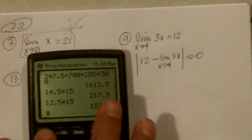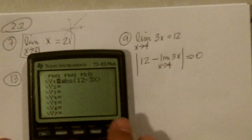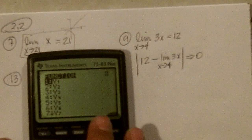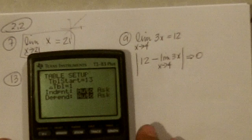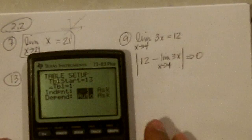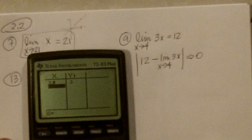So, second quit, so if I put, do vars, y variables, function, y1, let's do, actually let's do this, second quit, let's go second table set, and put it on ask, enter, and then go second table, and then I'll put something close to 4, 3.9,